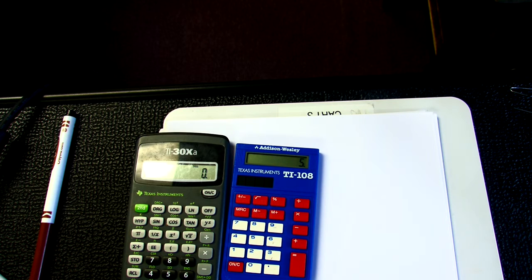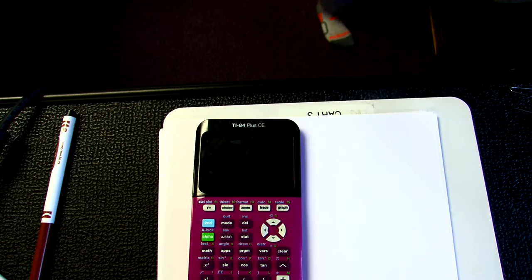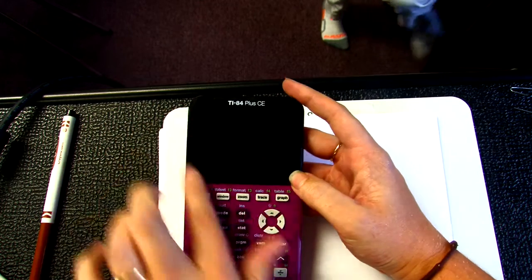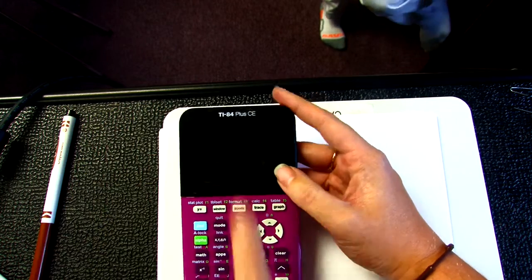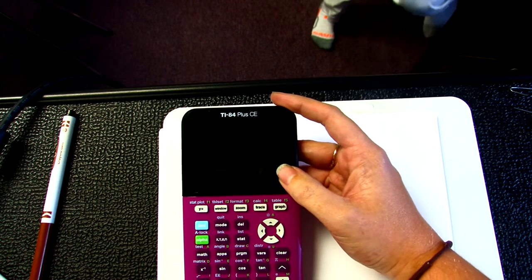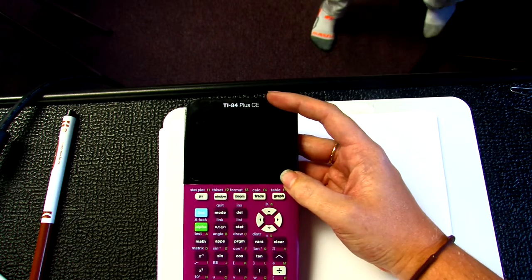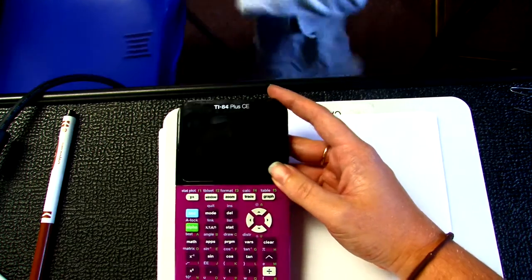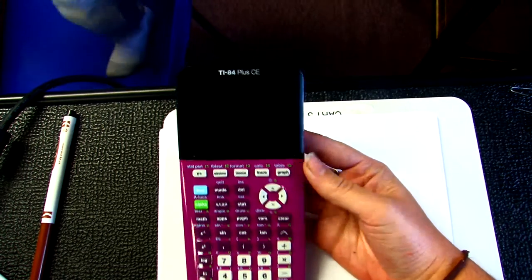Now, the calculators that need to have their memory cleared will look like this. Notice there's this huge screen, which means there are all kinds of things this calculator can do. It'll either say TI-84 or TI-83 or TI-Inspire. It'll be a bigger calculator with that full screen, and that's how you know you're going to need to clear this memory.